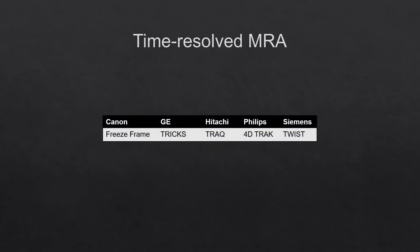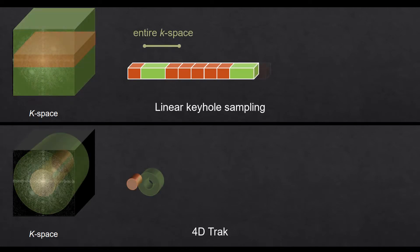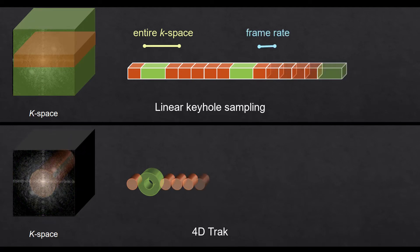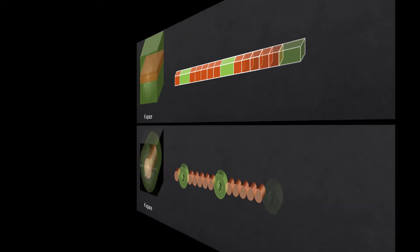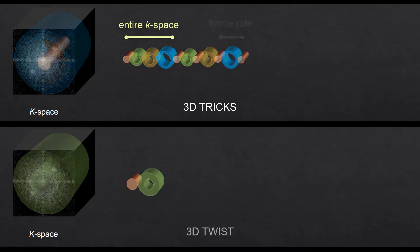Different vendors choose different ways to perform view-sharing in order to create their own time-resolved package, each with their own name. These can sample k-space in different shapes like rectangles or ovals, and they vary in how much of k-space they sample and how often. They all start with sampling the entire k-space, and the frame rate of the acquisition is determined by how often they sample the center of k-space.